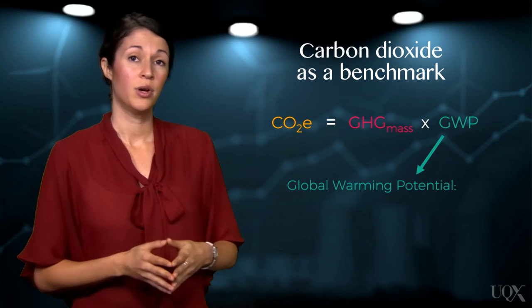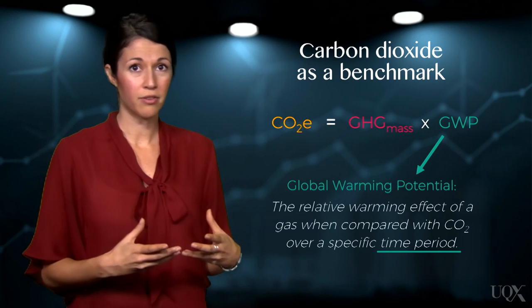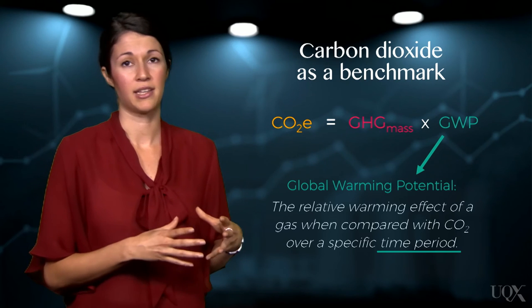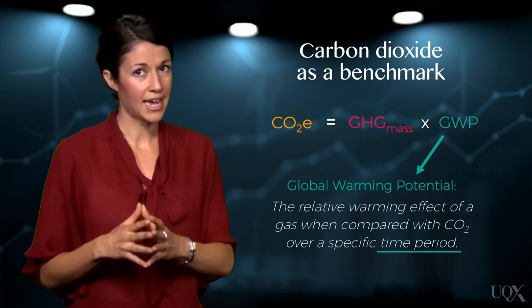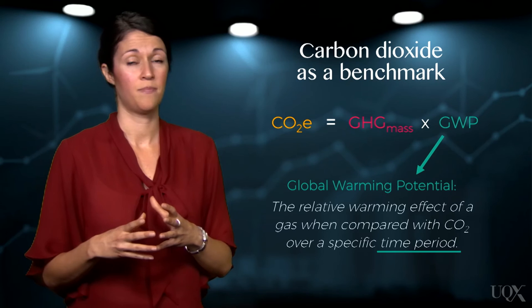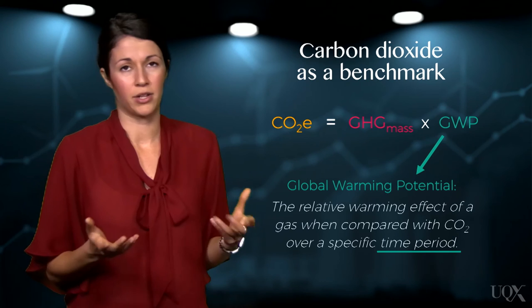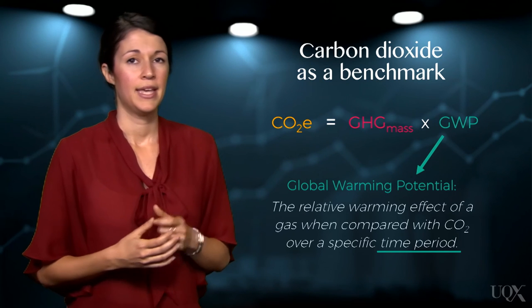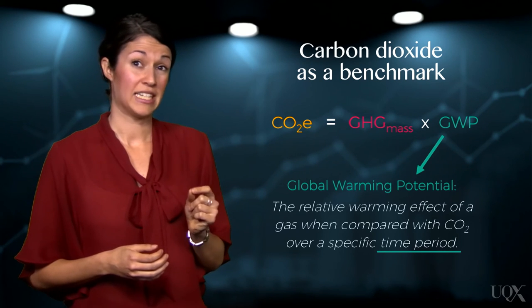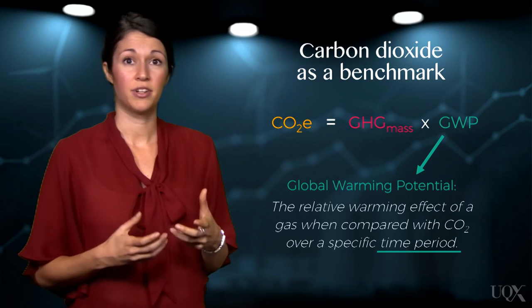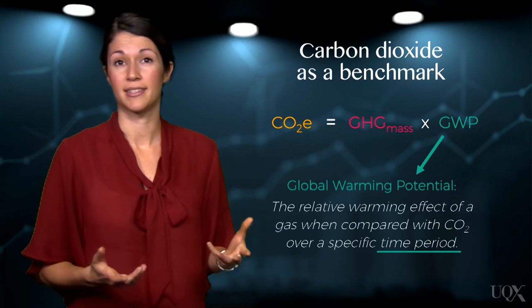Global warming potential represents the relative warming effect of a unit mass of the gas when compared with the same mass of carbon dioxide over a specific time period. This is commonly 20 or 100 years. Specifying the time period is important to address the different atmospheric lifetimes of the different greenhouse gases.